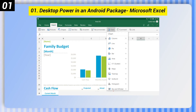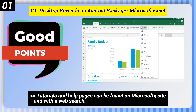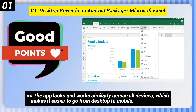Number 1: Desktop Power in an Android Package — Microsoft Excel. Here are some good points of this one. Tutorials and help pages can be found on Microsoft's site and with a web search. The app looks and works similarly across all devices, which makes it easier to go from desktop to mobile.